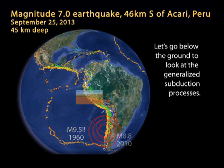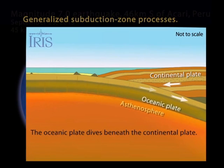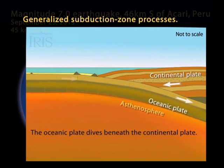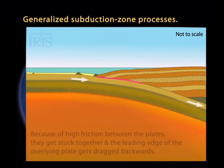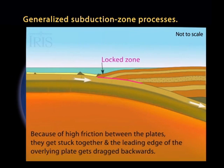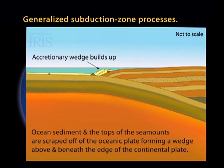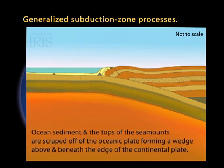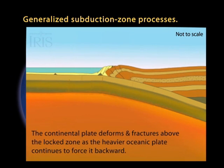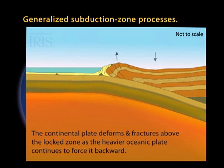Let's go below the ground to look at the generalized subduction zone processes. Here we see the oceanic plate diving beneath the continental plate. Because of high friction between the plates, they become locked and the overlying plate gets forced backwards, and a wedge forms at the trench. Under great strain, the continental plate deforms, building elastic energy in the process.